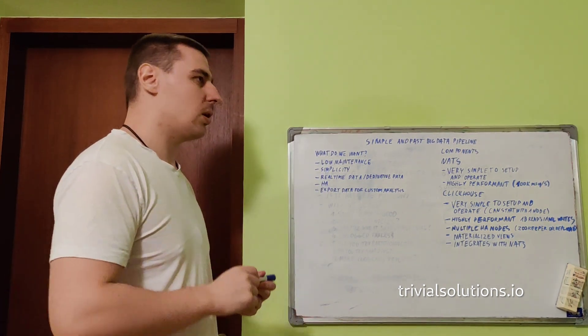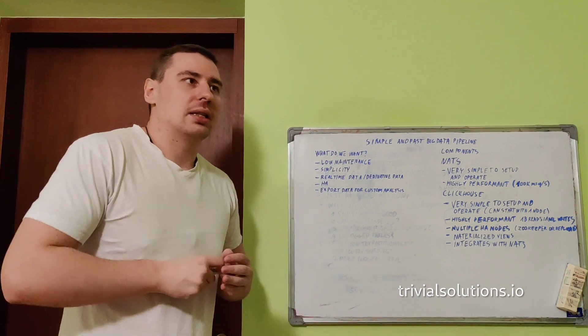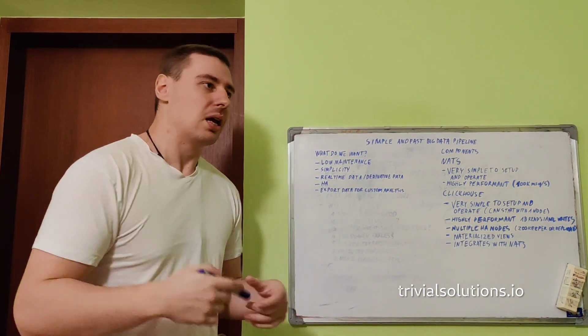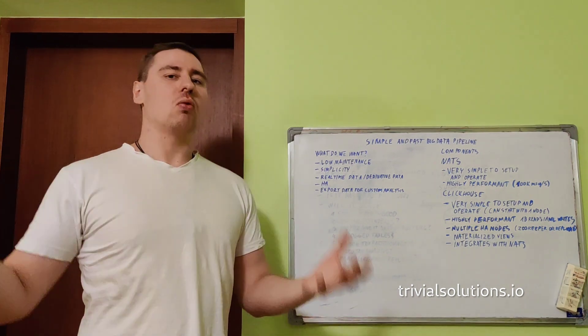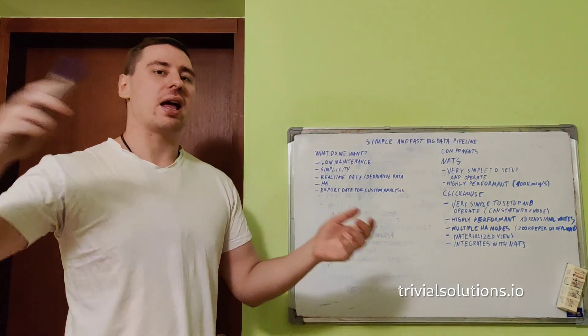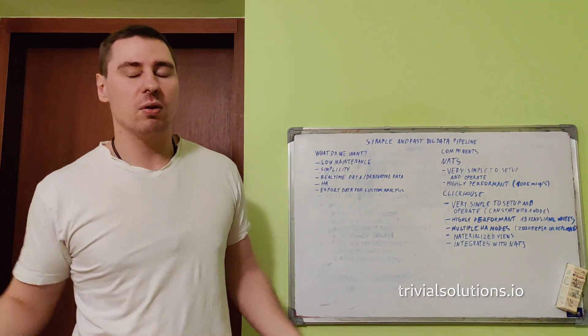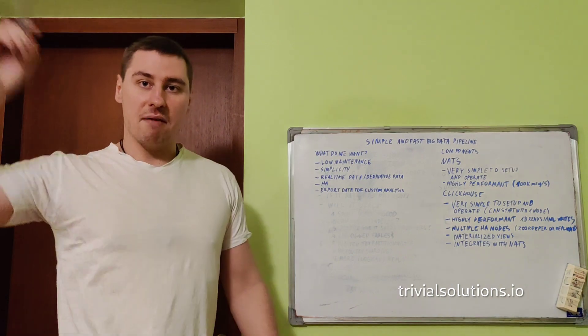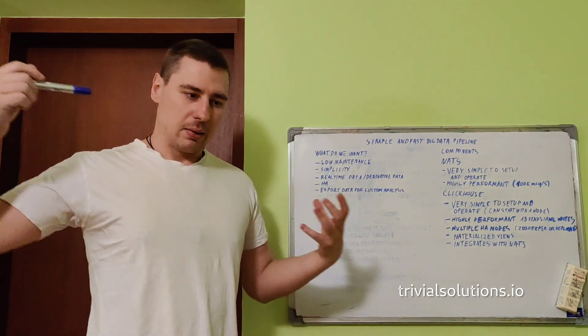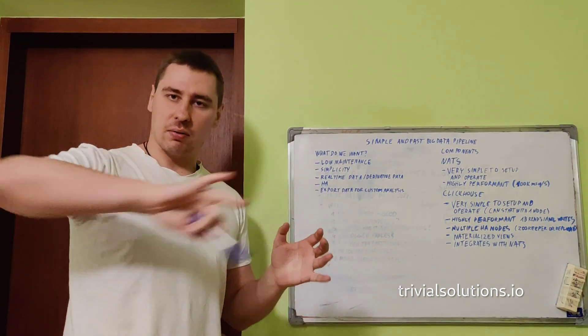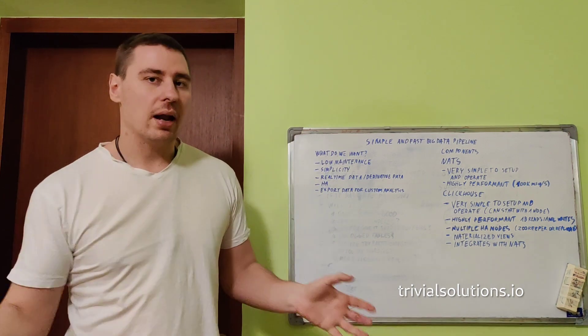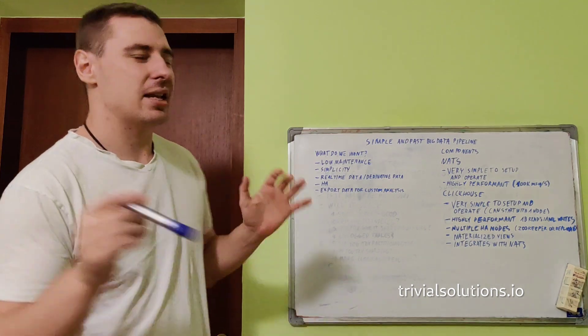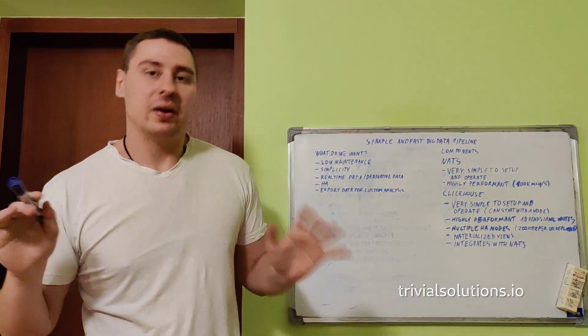We want real-time data and we want to derive data from our ingested data. A lot of solutions don't provide real-time data - you need to run batch jobs overnight and they only appear in the morning or hourly. Ideally we avoid this. If we have inserts to our tables, we see updated data right away and derivative data updated right away in real-time.